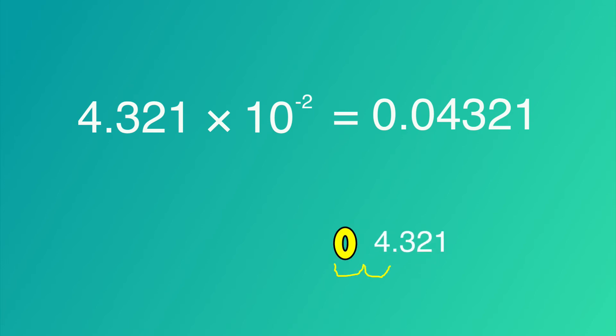For negative exponents, we just move the decimal point to the left. In this case, two spaces. And after we do that, we put a zero in front of the decimal point.